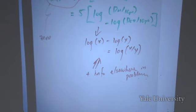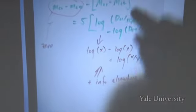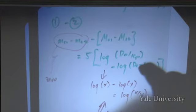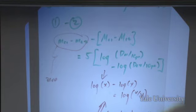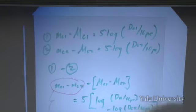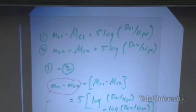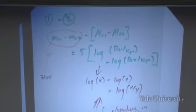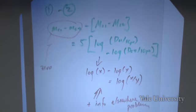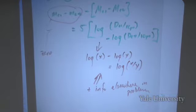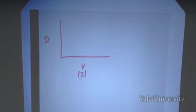Let me remind you why we're putting ourselves through this pain. The goal was to figure out how to measure the Hubble diagram — a diagram of velocity, which you can measure by redshift, versus distance. The whole reason we embarked on this adventure in magnitudes was because that's a critical component in how you determine the distance.